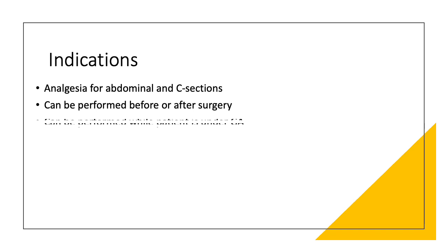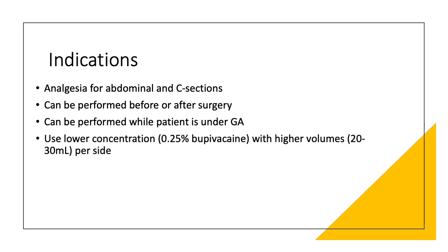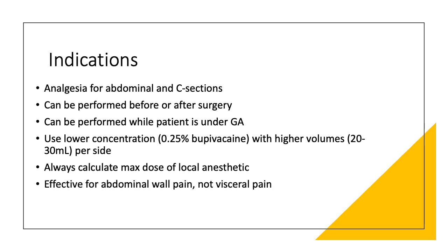Indications for the TAP block include analgesia for abdominal surgeries and C-sections. These blocks can be performed before or after surgery. Because the TAP block is a plane block, it can be performed while the patient is under general anesthesia. For the blocks, you want to use a lower concentration of local anesthetic with higher volumes — for example, 0.25% bupivacaine with 20 to 30 mils per side. Remember to always calculate the max dose of local anesthetics, as the TAP plane can be vascular.